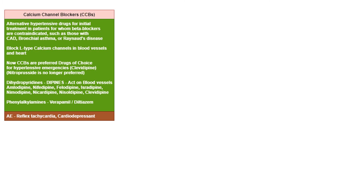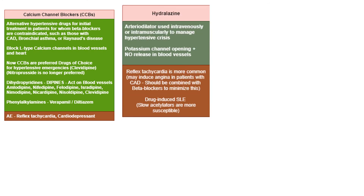Dihydropyridine calcium channel blockers (the '-dipines') act on blood vessels: amlodipine, nifedipine, felodipine, isradipine, nimodipine, and clevidipine. Phenylalkylamines such as verapamil and diltiazem act directly on the heart. Adverse effects include reflex tachycardia with the dipines and cardiodepressant activity with phenylalkylamines. Hydralazine is an arteriodilator used intravenously or intramuscularly to manage hypertensive crisis; it acts by opening potassium channels in blood vessels and additionally releases nitric oxide. Reflex tachycardia is common; it may induce angina in coronary artery disease, so it should be combined with beta blockers.